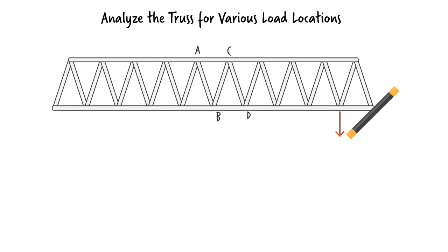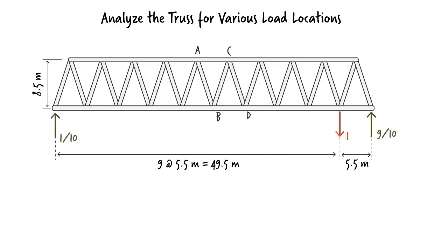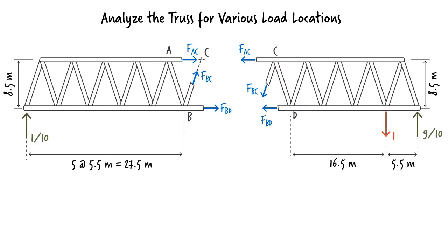When the unit load is placed at the first inner joint from the right end of the truss, we end up with these support reactions. Since we are interested in calculating axial force in members AC, BC and BD, we can cut the truss like this, dividing it into two substructures. We can then use either of the two free body diagrams to determine the three unknown member forces. Note that here we have assumed all three members to be in tension.